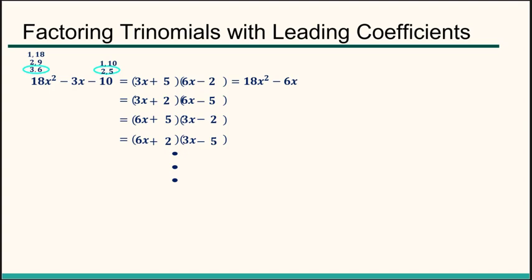I'm going to try this one. So, 3x times 6x, well that's 18x². 3x times the minus 2, that's minus 6x. Plus 5 times the 6x plus 30x minus the 10. That is 18x² plus 24x minus 10. Nope, that's not right. So give him up.